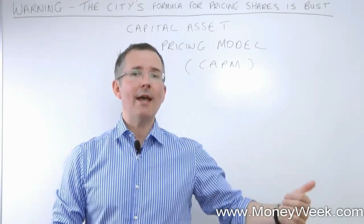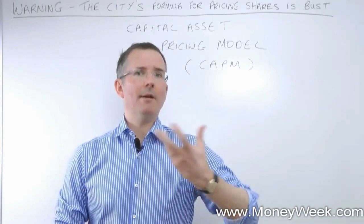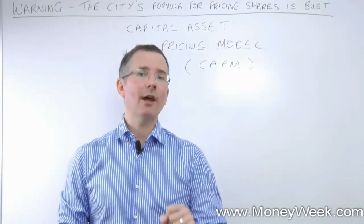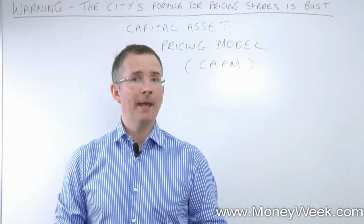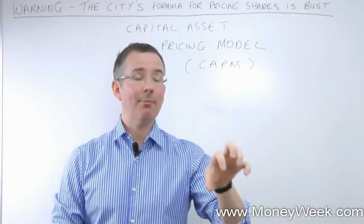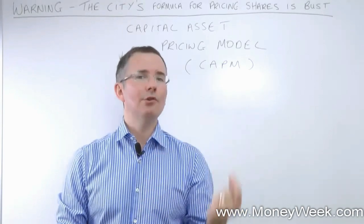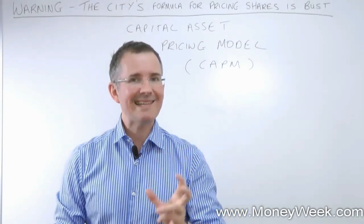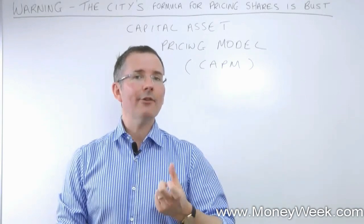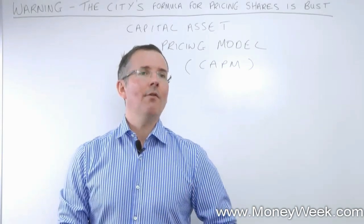CAPM will give you an answer — say 9%. And if you expect a share to return 15%, then CAPM says at current levels it's cheap, so you should buy. That's what CAPM is all about: looking at the expected return, the minimum level investors should expect for taking the risk of buying a particular share. The problem is not only does it make huge assumptions, but two of the key assumptions the CAPM model makes no longer hold. And if that's the case, the model is broken.